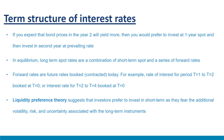Both the expectations theory and the liquidity preference theory are employed to explain the dynamics of the term structure of interest rates. In summary, interest rates differ for different maturities, and this variation leads to the term structure of interest rates, which can be rising or falling. Two key theories explain these term structures: the expectations theory and the liquidity preference theory.